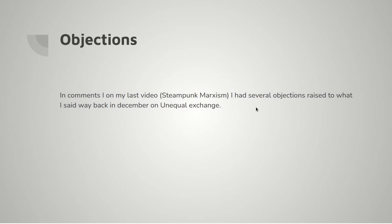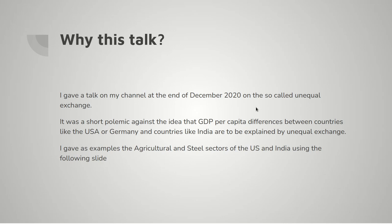In comments on my last video, which came out a couple of days ago on steampunk Marxism, I had several objections raised to something I'd said way back in December about unequal exchange. The talk I gave then was a polemic against the idea that GDP per capita differences between countries — like the USA or Germany on the one hand and India on the other — are to be explained by unequal exchange. This is an old pre-Marxist, Proudhonian socialist idea.